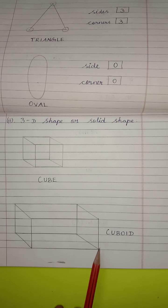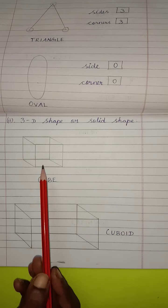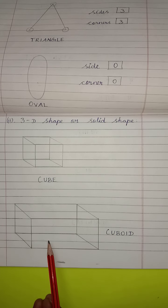What is this children? Cuboid. Using a rectangle, we can draw the cuboid. Using a square, we can draw cube. Using a rectangle, we can draw a cuboid.